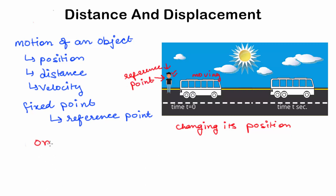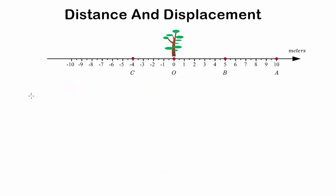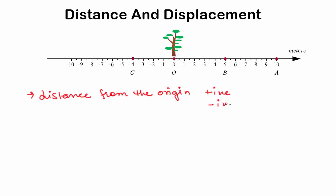So reference point or origin is defined as a fixed point or fixed object with respect to which the given body changes its position. To describe the position of the particle at a given time, we have to specify its distance from the origin and whether it is in the positive direction or negative direction as seen from the origin. Let us now consider an example where a man starts walking towards the right of the tree.